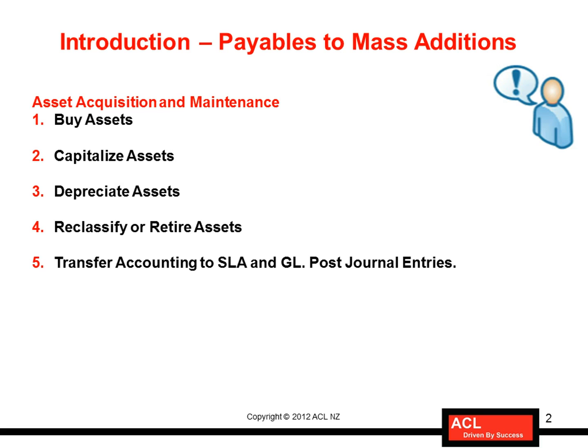Basically, large organizations — just like any other goods or services — purchase assets from suppliers. After those assets have been purchased, Oracle provides a module called Fixed Assets to maintain them through their life cycle. The Fixed Assets module helps organizations capitalize those assets, bring them into service, depreciate them over their asset life cycle, and reclassify those assets.